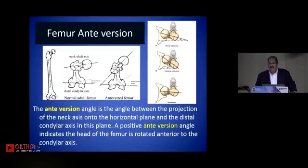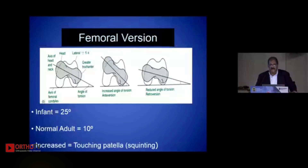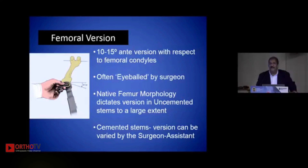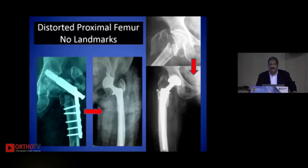Coming to the femur: femoral anteversion is the angle between the projection of the neck relative to the condyles, usually around 10 to 15 degrees. In infants it is more, and increased anteversion gives an in-toeing gait. Femoral version is usually an eyeball scenario for most surgeons — the native femur morphology restricts or dictates it, especially in uncemented systems. In cemented systems we have some leeway, and surgical technique is crucial. Where proximal landmarks are missing, anteversion is referenced to the distal femoral condyles.